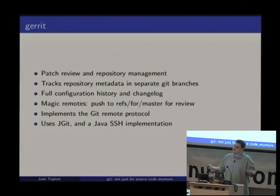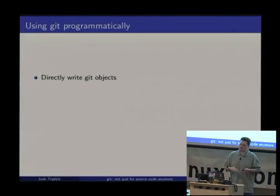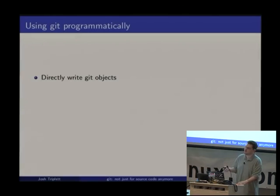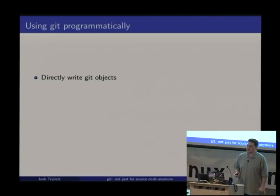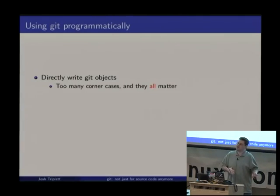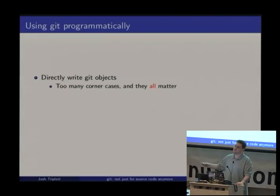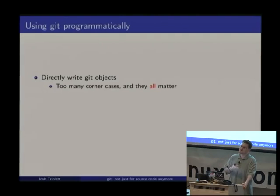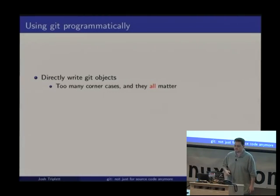Now, after hearing how Git repositories are structured, you might be tempted to directly write Git objects to the repository — there are only four types and the formats are reasonably documented. Don't do that. There are way too many corner cases, including packs, packed refs, remote protocols, and several dozen weird little edge cases you have to implement before you can interoperate with real-world tools. Even after all that, you'd probably end up with something slower than just forking and exec'ing Git.